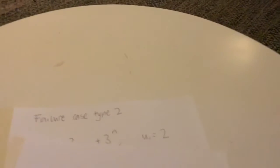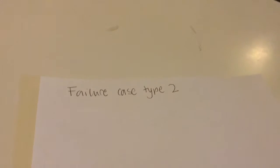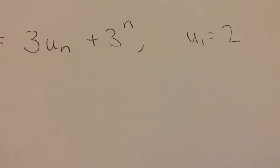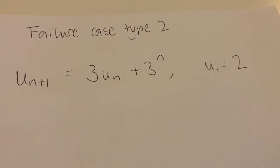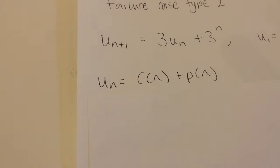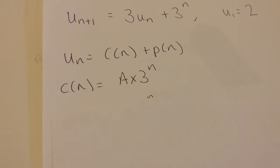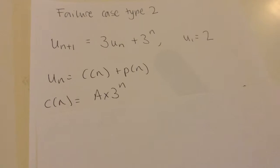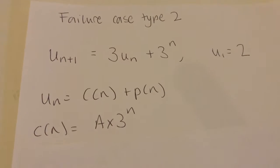The second type is when your particular solution is of the same form as your complementary function. There's the recurrence relation I've got to solve. I set it up as normal with my complementary function plus my particular solution. My complementary function is A times 3 to the power n. But notice that is in exactly the same form as my particular solution, so this isn't going to work.